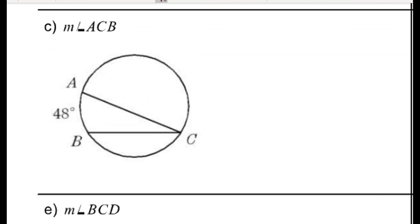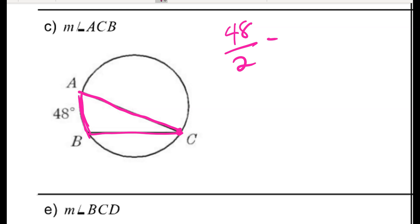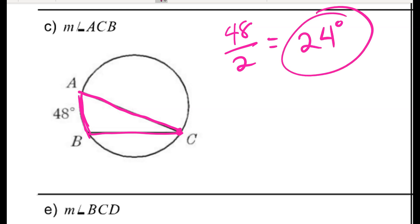For problem C, I see an inscribed angle — not a central angle — with the vertex on the circle intercepting arc AB. The rule is that the angle is just half the arc. So the measure of angle ACB is 24 degrees.